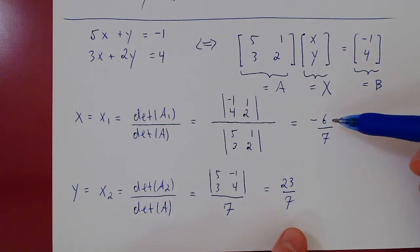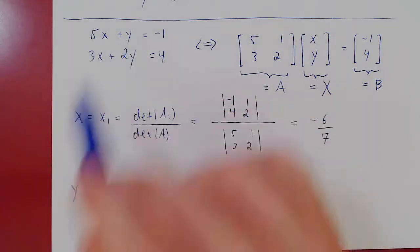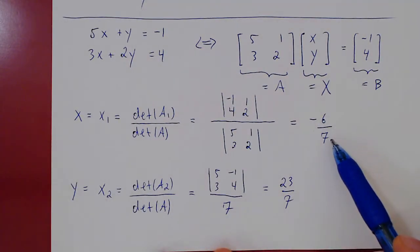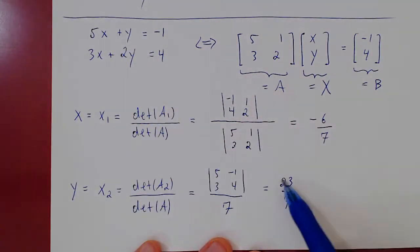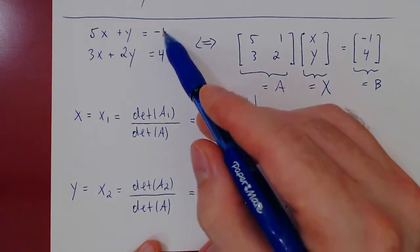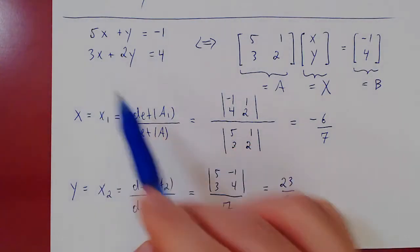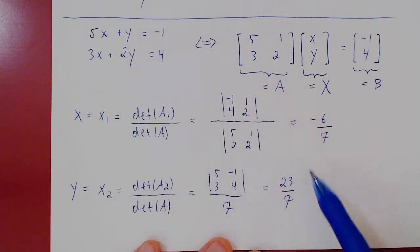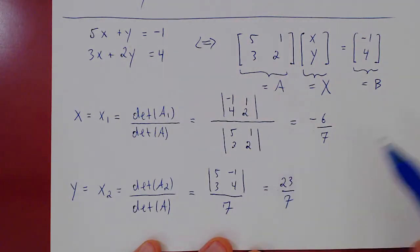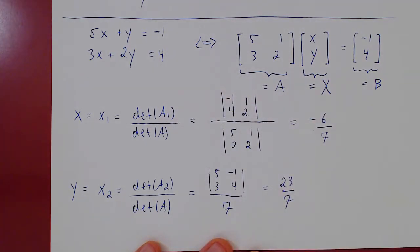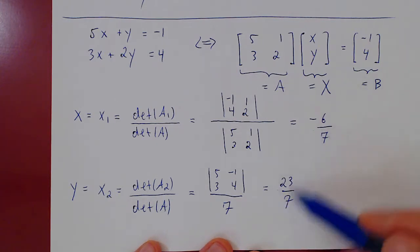We now have the unique solution: x = −6/7, y = 23/7. We can verify: 5x = −30/7, plus y = 23/7, gives −7/7 = −1. Check. And 3x = −18/7, plus 2y = 46/7, gives 28/7 = 4. So indeed we have the correct solution.